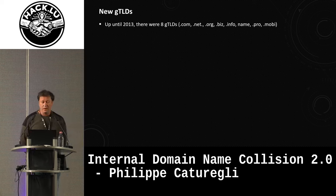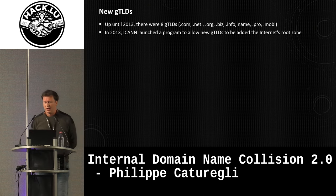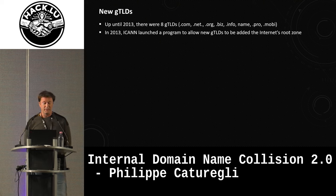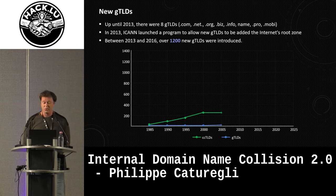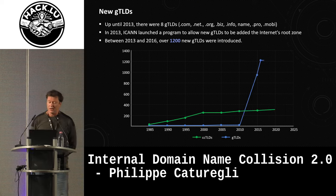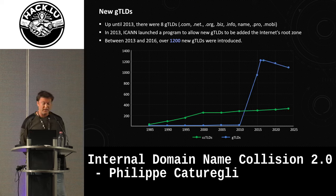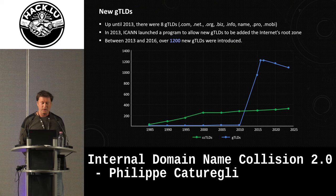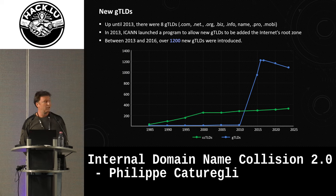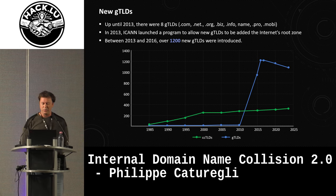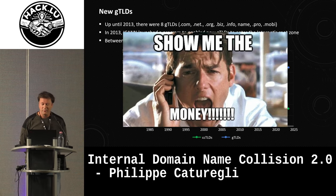Up until 2013, ICANN had about eight GTLDs. Then in 2013, ICANN launched a program to create new TLDs, and between 2013 and 2016, 1,200 new GTLDs were introduced. And if that wasn't enough, ICANN is preparing another GTLD program in April 2026 — the application opens next week if you're interested. The real question is why did ICANN decide to increase the number of GTLDs by 15,000 percent after safely operating the DNS infrastructure for more than 25 years? The answer is easy: for money.